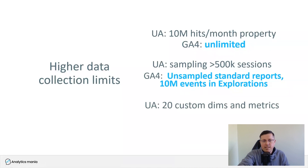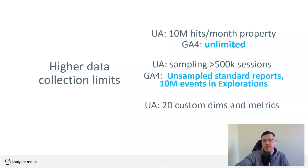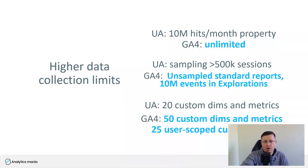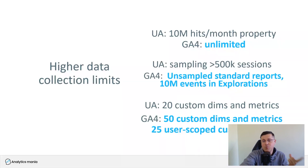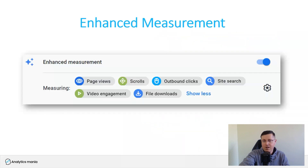In Universal Analytics (free version) we had 20 custom dimensions and 20 custom metrics. In GA4 you have 50 custom dimensions, 50 custom metrics, and 25 user-scoped custom dimensions. So the limits are higher in GA4.